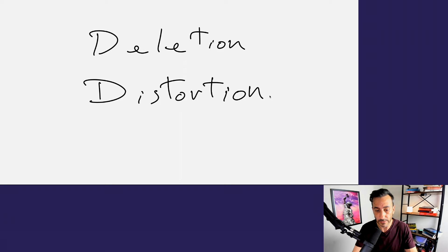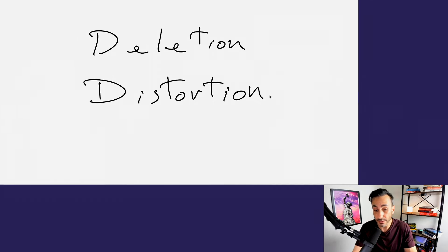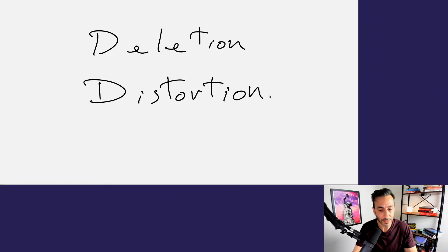Then we have complex equivalents. This is when we equate things — a statement or statements that imply that two things are equal or mean the same thing when there's no actual connection or truth to the statement. Something like 'she did better than me, I must not be meant for this.' I would say, 'how does her being better than you at this mean that you're not meant for this?' When you ask that question and they have to explain it, they'll often realize, 'wait, that's not exactly true — there's not really a connection between those two.' Anytime someone does better at something than you, that doesn't mean you shouldn't do it. But if that question isn't asked, they could stay stuck in that limitation.